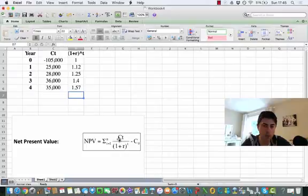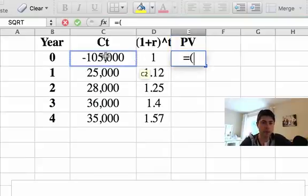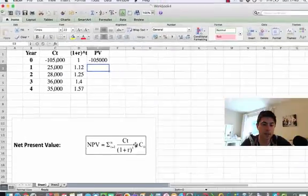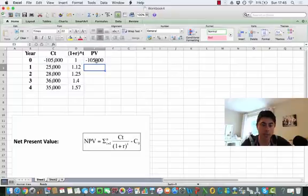I'm going to continue on with the formula. CT divided by what we had just done, 1 plus R to the power of time. And that's known as your present value. And notice here, the present value for year zero, it's negative. This relates to the negative C naught here. So we've already just done that calculation because negative 105,000 divided by 1 is your negative 105,000. So this is already included in the table, the calculation in the table.